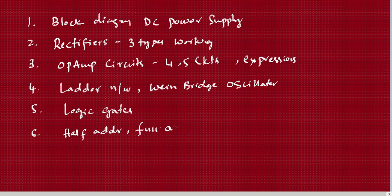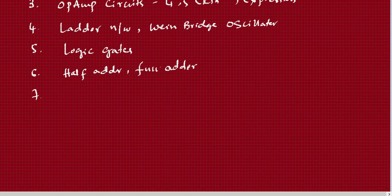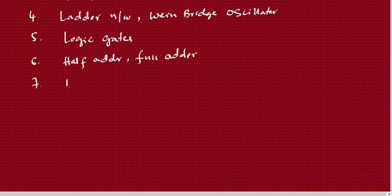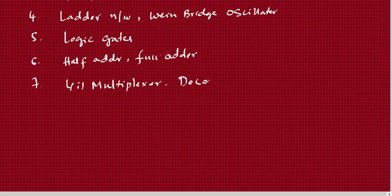For half adder and full adder, study the truth table and the circuit. The next important topic in Module 2 is the 4-to-1 multiplexer, which is very very important. The decoder can also be asked and should be studied as a very important question.